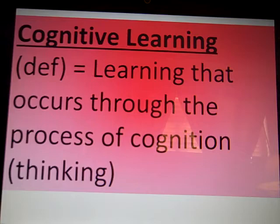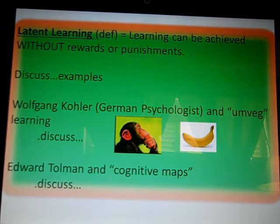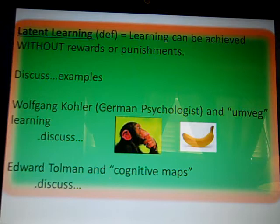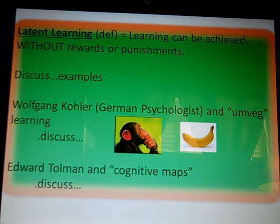So what does that mean? We'll talk about some of the different facets of cognitive learning, starting with the idea of latent learning. Learning can be achieved without rewards or punishments. So far we've talked about classical conditioning, where there's a reward set up, and operant conditioning, where there are punishments and reinforcements. Think about a time where you've learned something, not by being punished or reinforced, not instinctively, but just by thinking your way through.